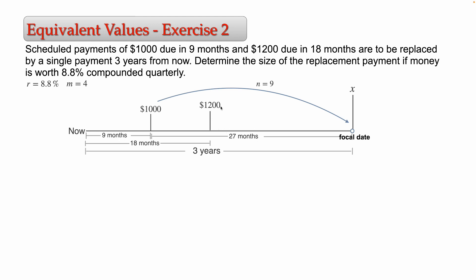We need to do the same with the $1,200. The focal date is after the $1,200 payment, so we go forward in time, meaning n will be positive in the equation. We need the number of quarters between the scheduled date and the focal date. The $1,200 is due at 18 months, and the focal date is at 36 months, so 36 minus 18 equals 18 months. Dividing by 3, we get n equals 6 for the $1,200.